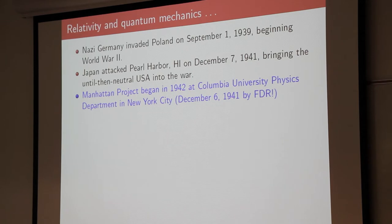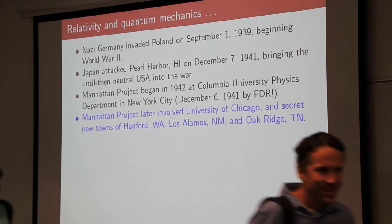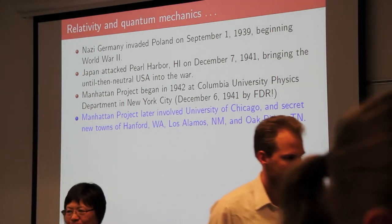For various reasons, the letter didn't reach Franklin Roosevelt's desk for a little over two years. He actually signed a secret order on December 6th, 1941 — the evening before the attack on Pearl Harbor — which established the Manhattan Project, initially beginning at Columbia University. Later it involved the University of Chicago, where Enrico Fermi set up an atomic pile leading to the first controlled fission. It also led to the creation of secret towns in Hanford, Washington; Los Alamos, New Mexico; and Oak Ridge, Tennessee.